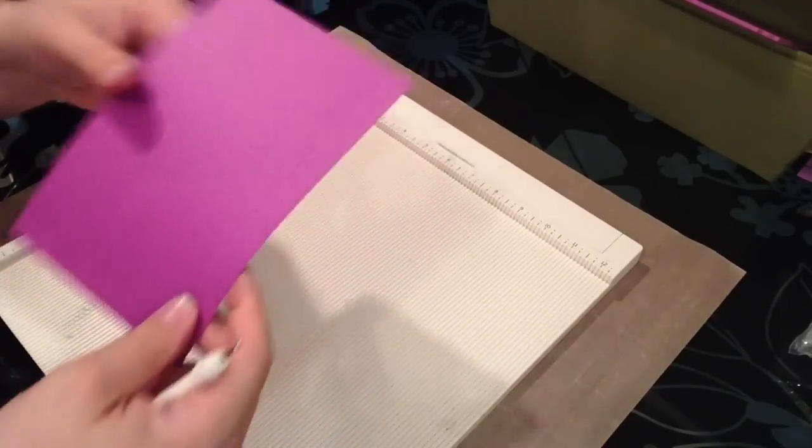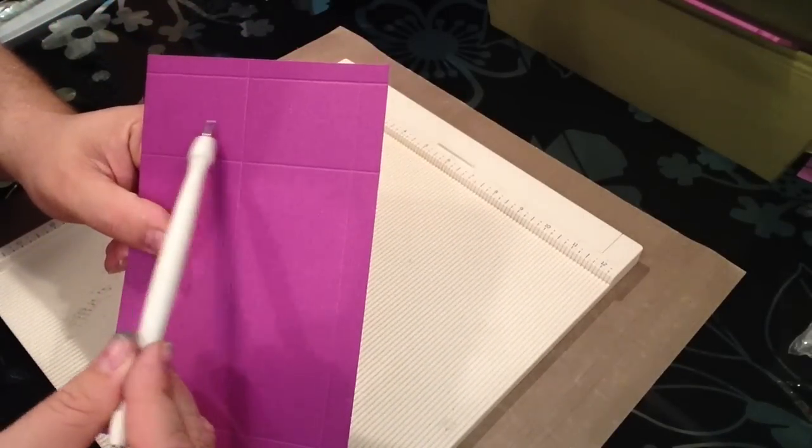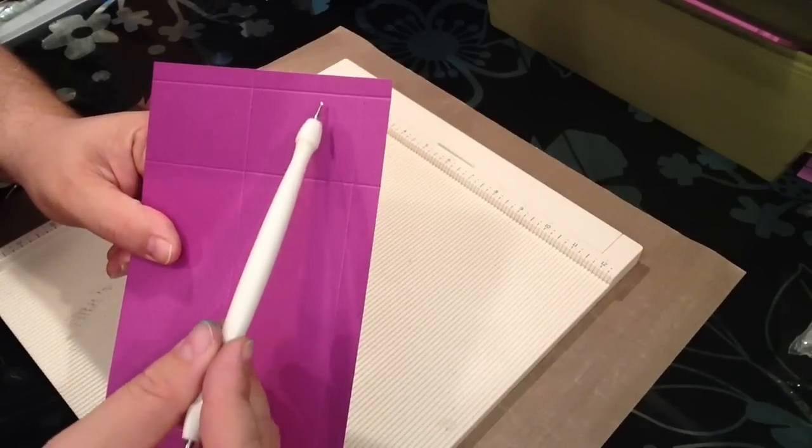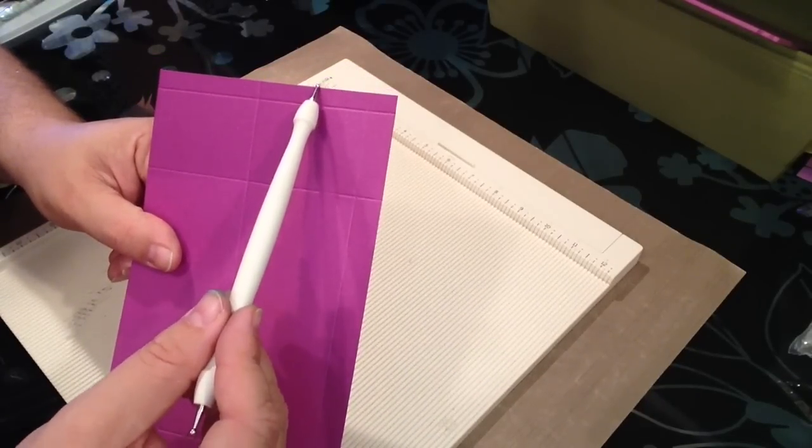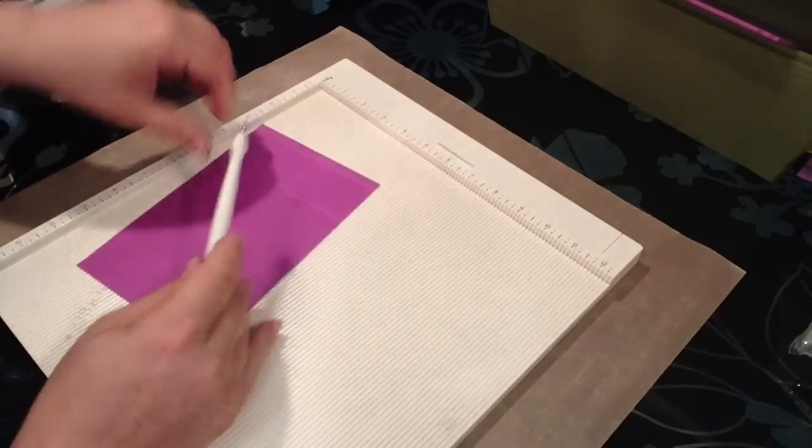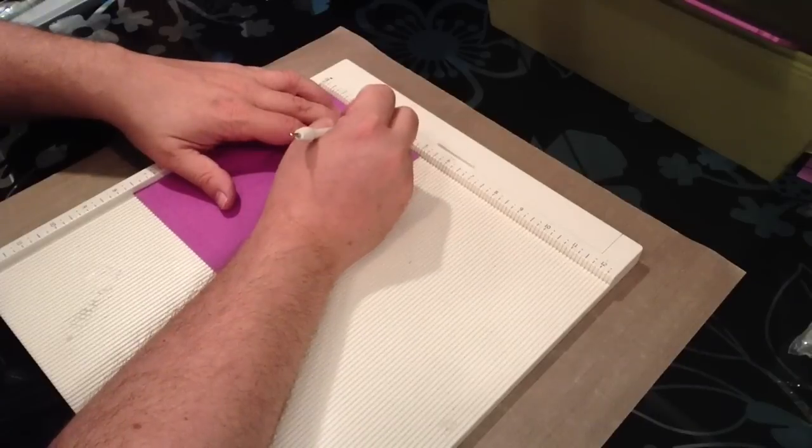You'll notice at the very top here I have these two smaller square sections. I want to make a score but it's only going to be in this part up here, just that little section, so you make that score at three and three-eighths.